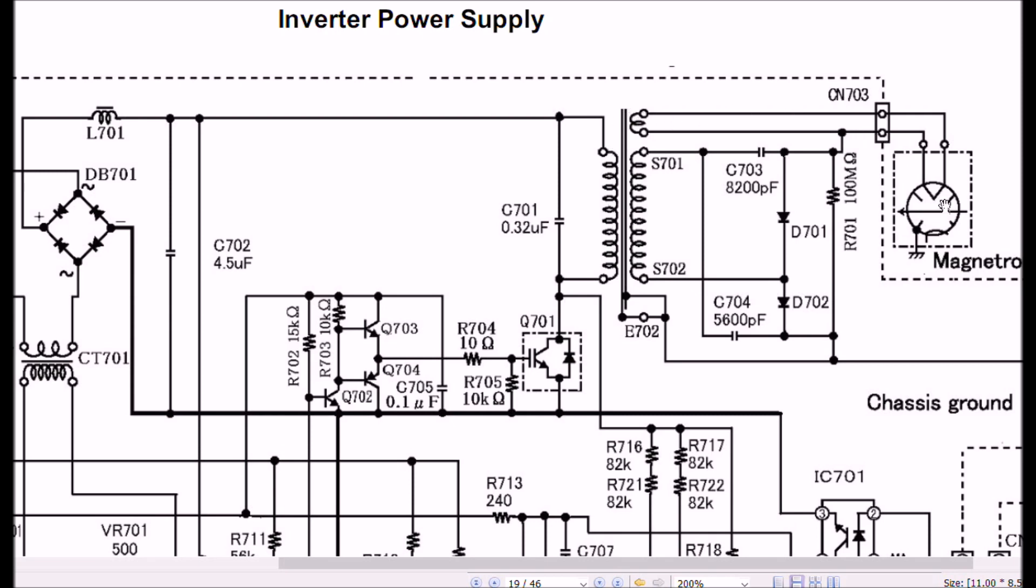Then you have this transformer. It usually has a ferrite core transformer. One winding goes to the magnetron filament. The magnetron is still a vacuum tube, nonetheless. It's just a very high frequency oscillating vacuum tube. You'll notice here we have D701, D702, C703, and 704. These form a voltage doubler. Now these capacitors don't look that big as far as value goes. That's because when you switch at high frequencies, you can significantly reduce the size, weight, and cost of the transformer. So a transformer that might have weighed 6, 7, 8 pounds can be reduced to about a pound and handle the same amount of power.